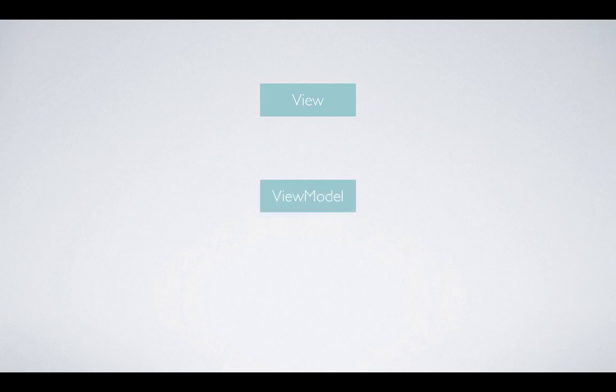The MVVM pattern consists of the view, the view model, and the model. The view is whatever is displayed on the screen — your iPhone screen, your Apple TV screen, or your Apple Watch. Anything the user can interact with is a view.